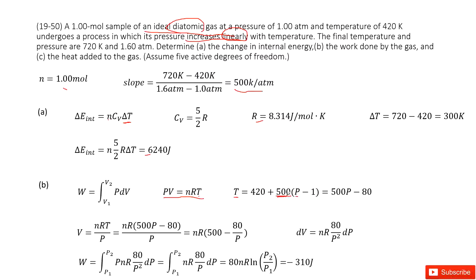This is the slope, 500. And initial point is 1 atm, so use P minus 1. And at this point, what is temperature? 420K. So in this way, we can write the equation for the temperature and the pressure as T equals 420 plus 500 times P minus 1, which is 500P minus 80.